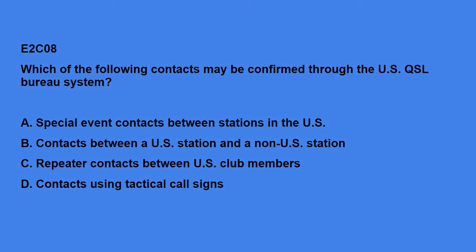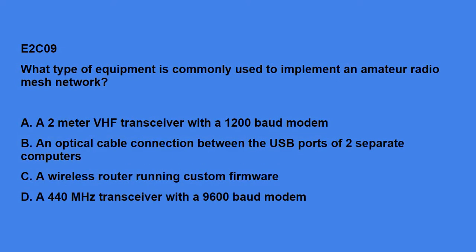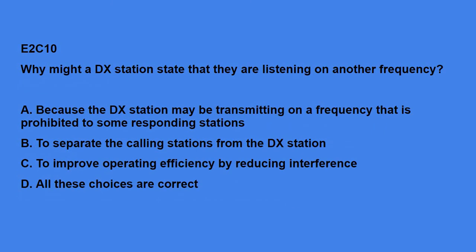E2C08: Which of the following contacts may be confirmed through the US QSL Bureau system? Contacts between a US station and a non-US station. E2C09: Which of the following types of equipment is commonly used to implement an amateur radio mesh network? A wireless router running custom firmware. E2C10: Why might a DX station state that they are listening on another frequency? All of these choices are correct: because the DX station may be transmitting on a frequency prohibited to some responding stations, to separate the calling station from the DX station, or to improve operating efficiency by reducing interference.